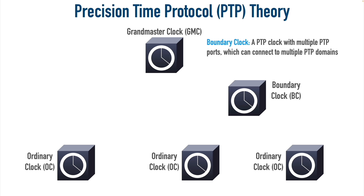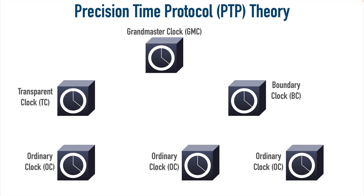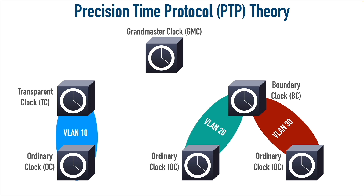Another clock type is a boundary clock, which can sit at the boundary of multiple PTP domains. That's as opposed to a transparent clock, which is typically just a switch on the path from the Grand Master to the ordinary clock. Going through a transparent clock adds some delay, and since we're talking about accuracy on the order of nanoseconds, the transparent clock measures that delay — called the residence time. A transparent clock can only communicate time on one VLAN, whereas a boundary clock, sitting at the boundary of potentially multiple PTP domains, can communicate time out to multiple VLANs.